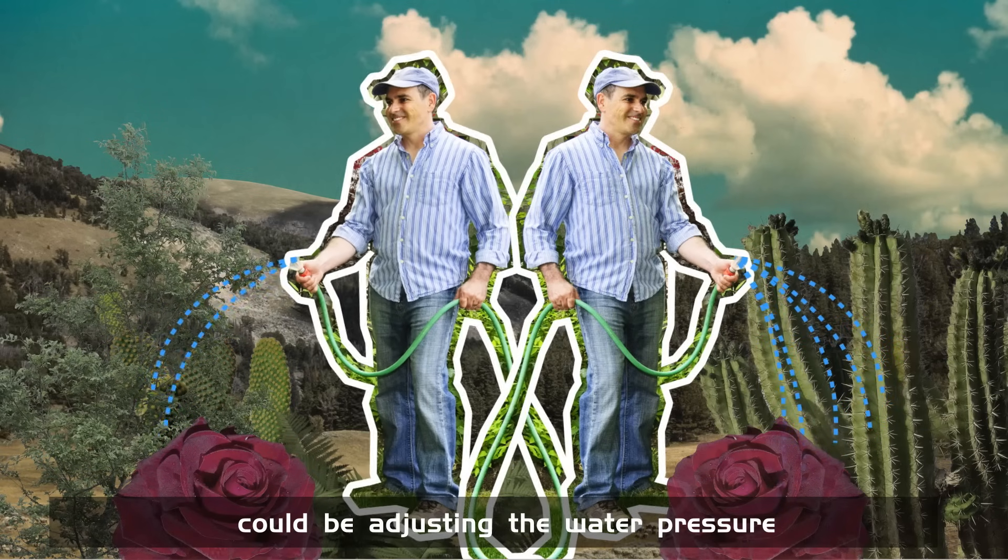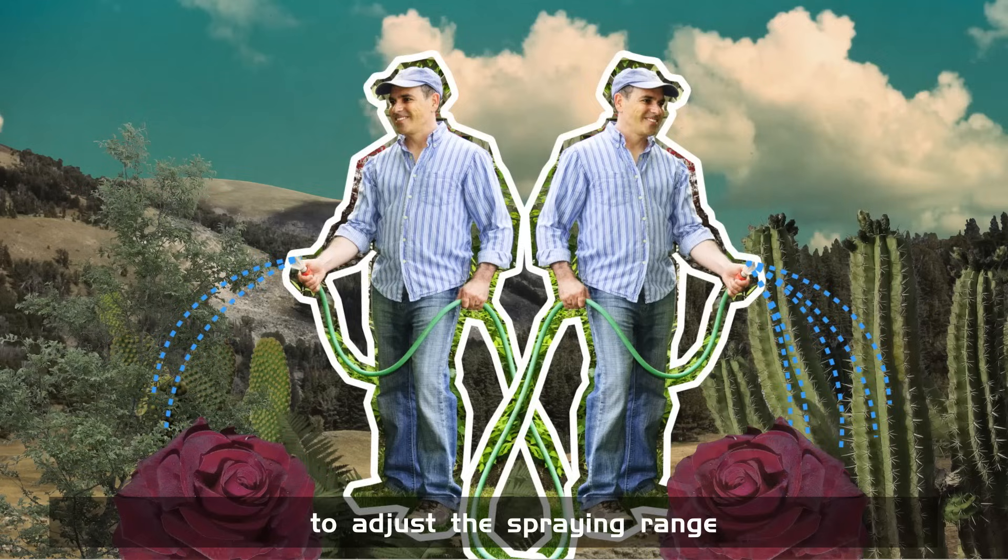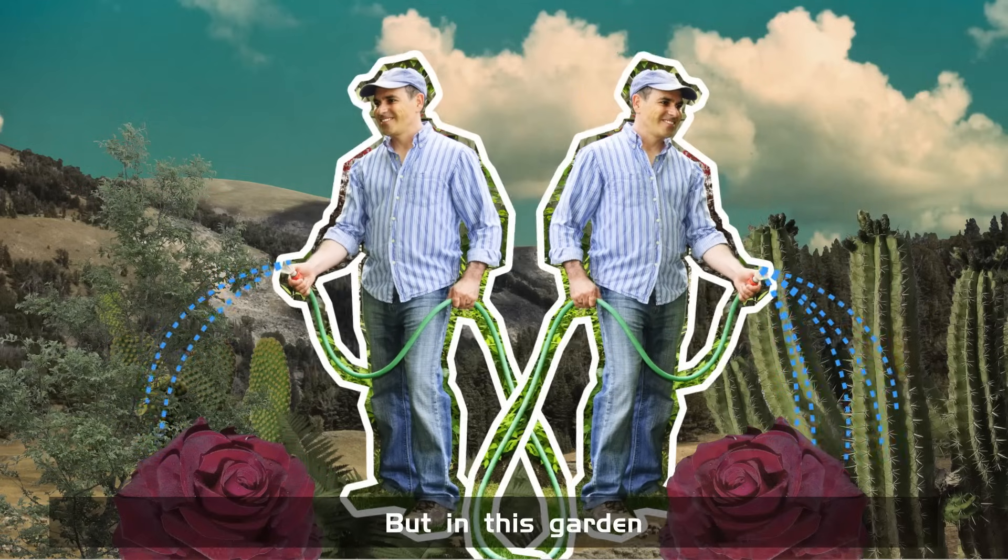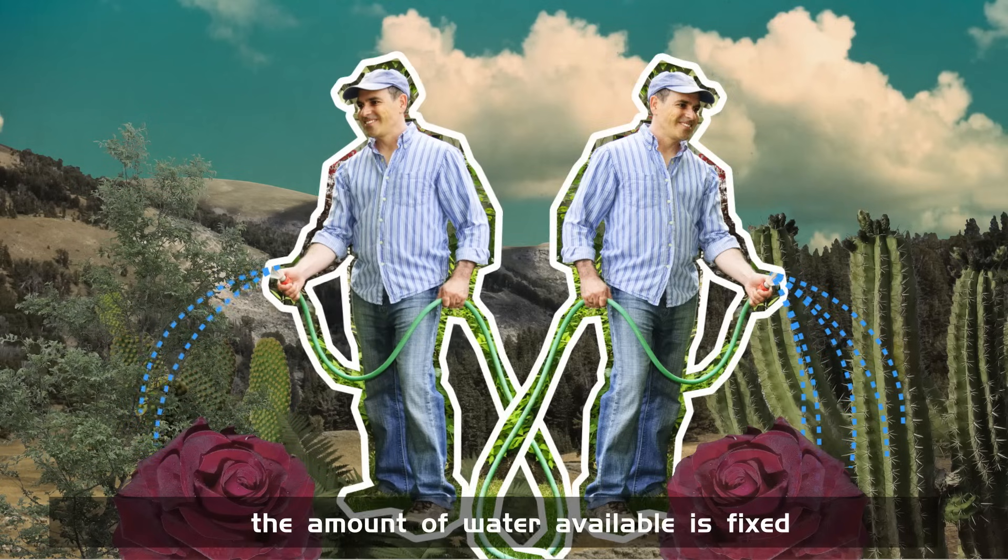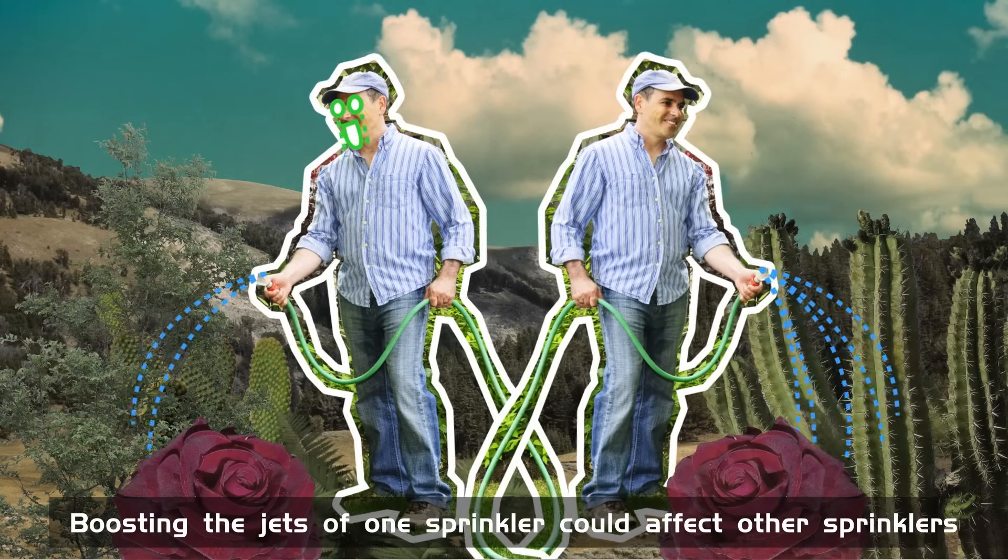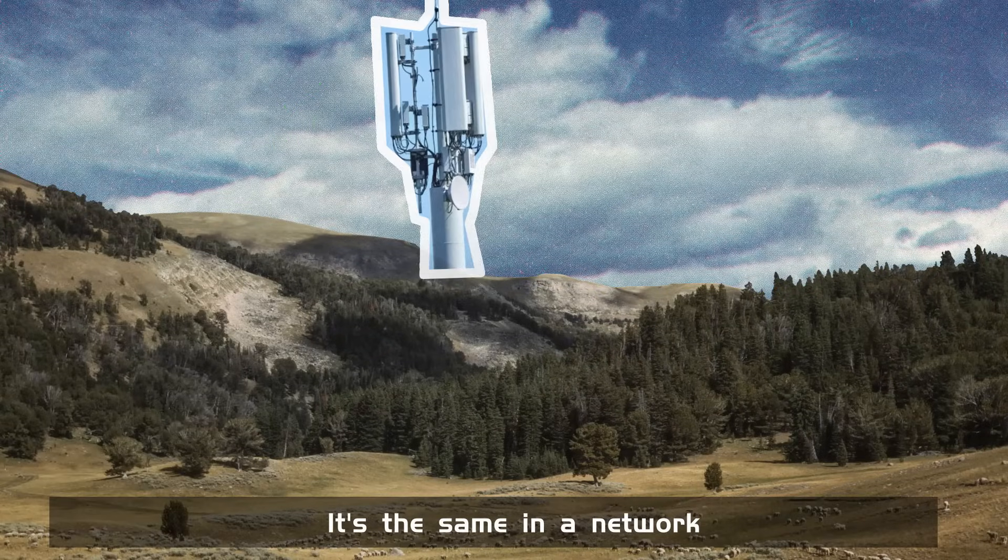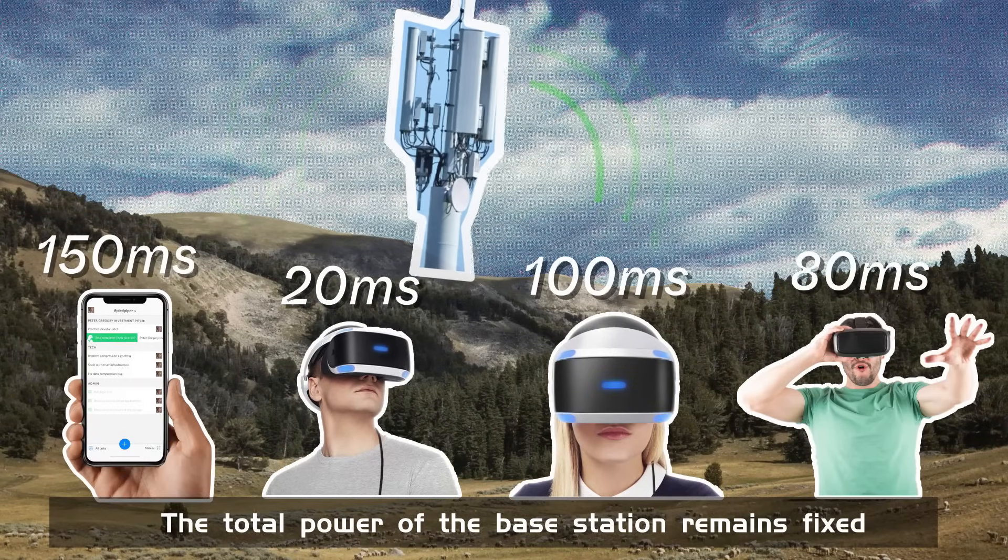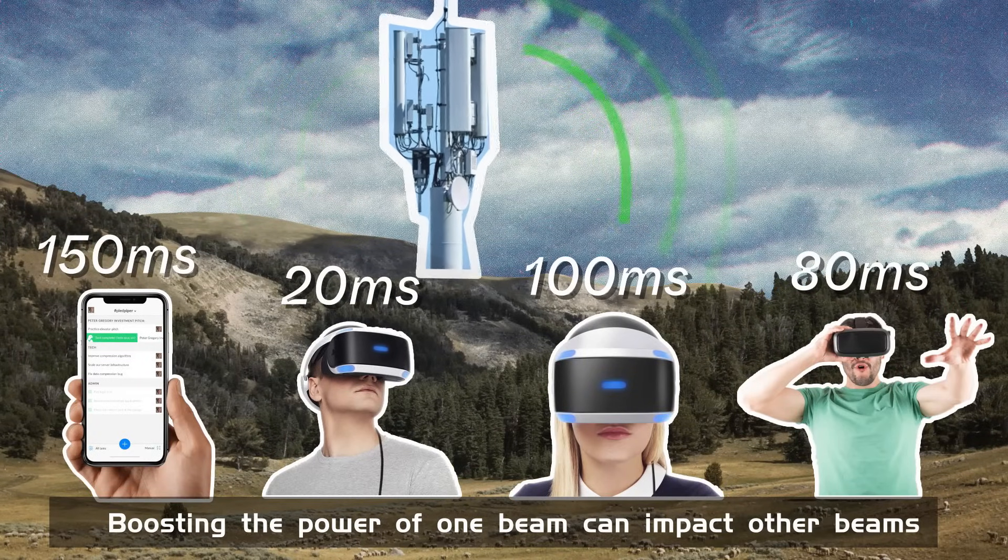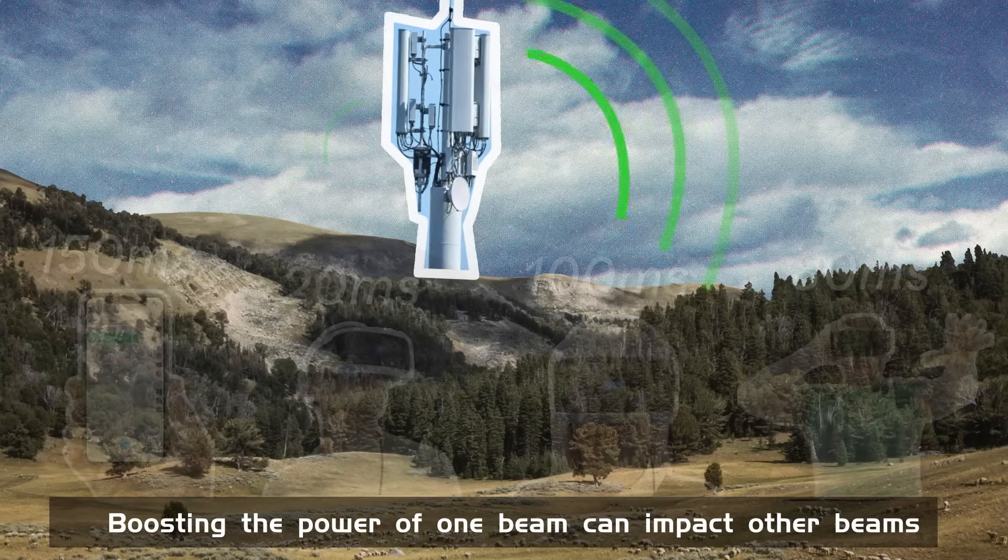Another solution could be adjusting the water pressure to adjust the spraying range. But in this garden, the amount of water available is fixed. Boosting the jets of one sprinkler could affect other sprinklers. It's the same in a network. The total power of the base station remains fixed. Boosting the power of one beam can impact other beams.